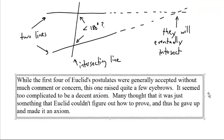While the first four of Euclid's postulates were generally accepted without much comment or concern, this one raised quite a few eyebrows. It seemed too complicated to be a decent axiom. It's violating that principle of if you're going to have people just assume things without proof, they should be very simple, intuitive things. This is complicated.